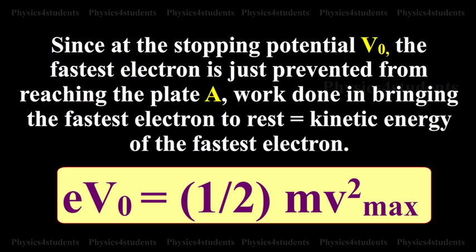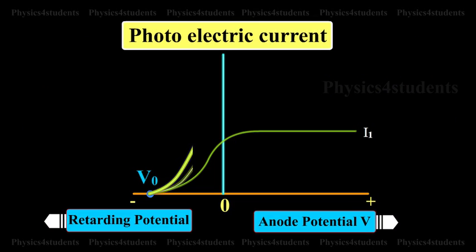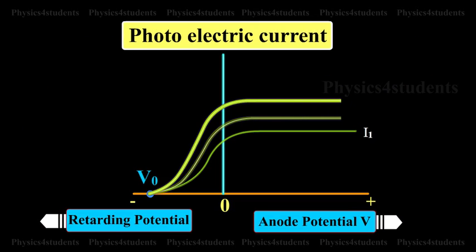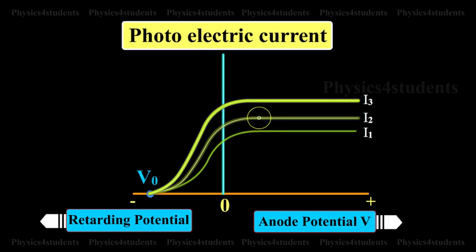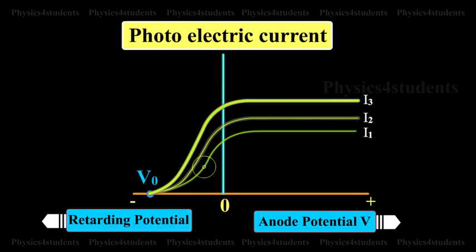The above equation indicates that the stopping potential depends upon the velocity of the fastest electron. The experiment is repeated with the incident radiation of the same frequency but of higher intensities I2 and I3. It is found from the graph that the saturation currents are proportional to the intensities of the radiation. But the stopping potential remains the same for all the intensities.